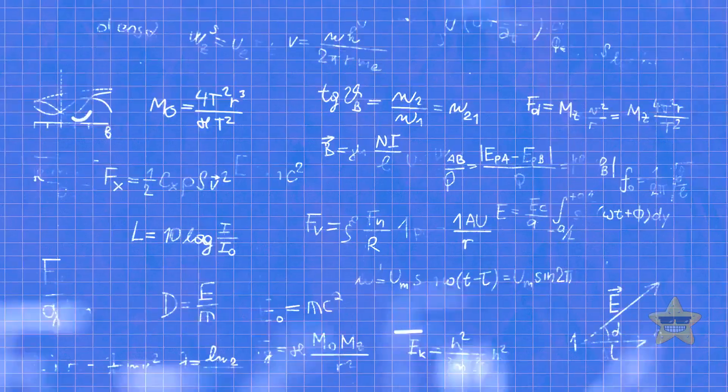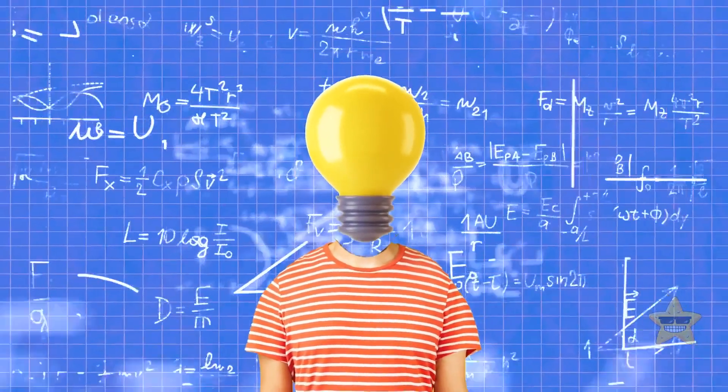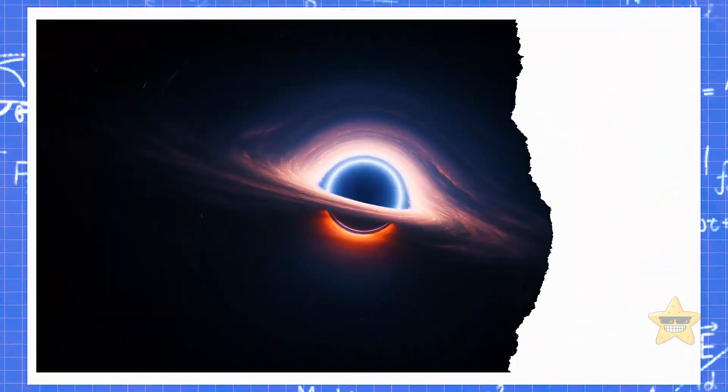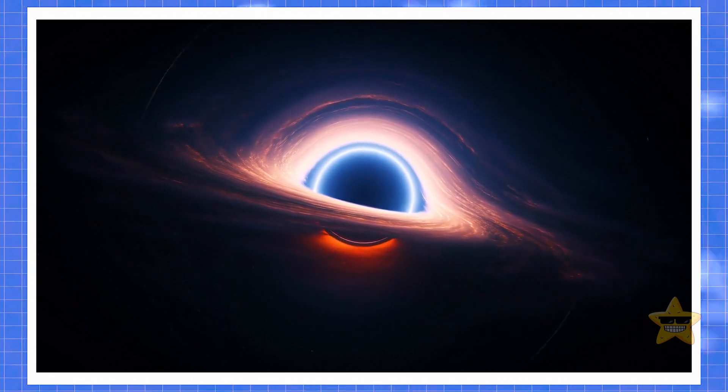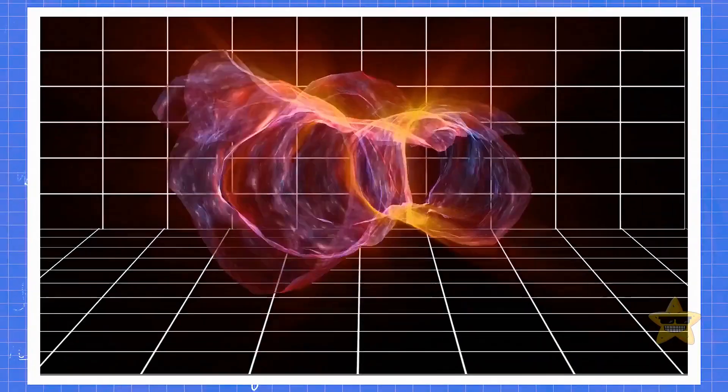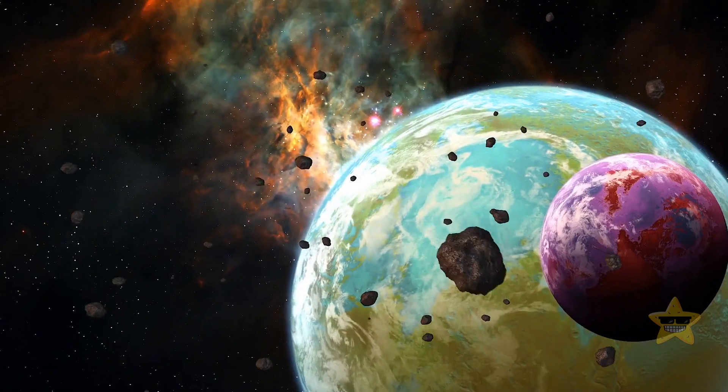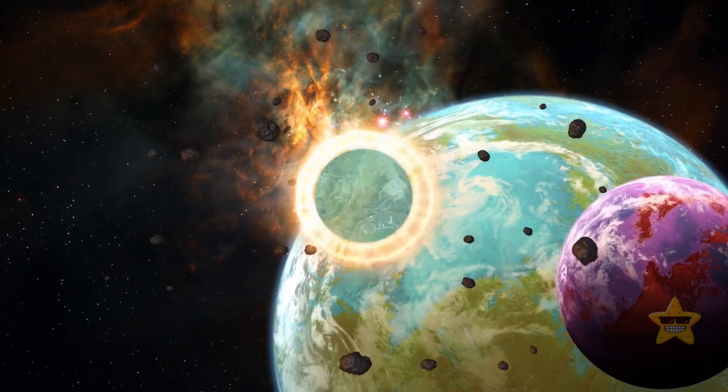Now here comes the tricky part. According to some super smart physicists, if we ever want to build a time machine, we'd have to figure out a way to harness the energy of an entire star or a massive black hole. And that's not all. There's an even bigger challenge. We'd also need to stabilize the wormhole and make sure that the entrance, or the place where we step into the wormhole, stays open for our return trip.